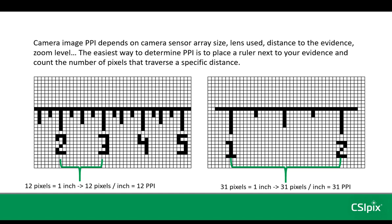Obviously in real life, we don't make you count pixels along a ruler — we do that in software in the background. In CSIPIX, the function we use is called manual calibration. Essentially, you mark the pixels at two points along a ruler, you tell the software the actual distance, and we'll do the counting of pixels and the converting to PPI in the background.